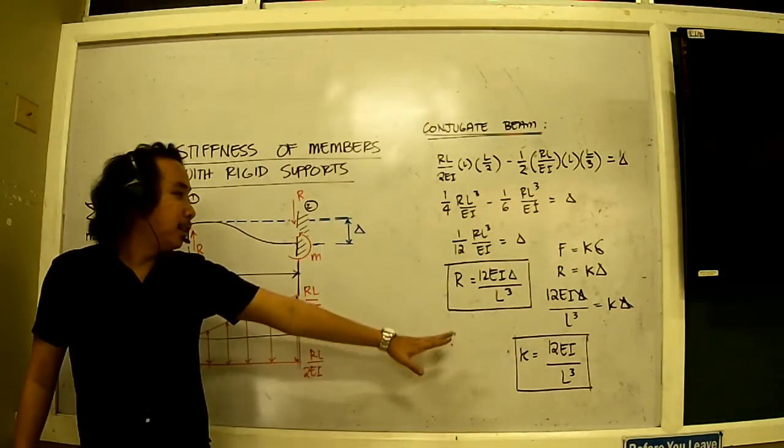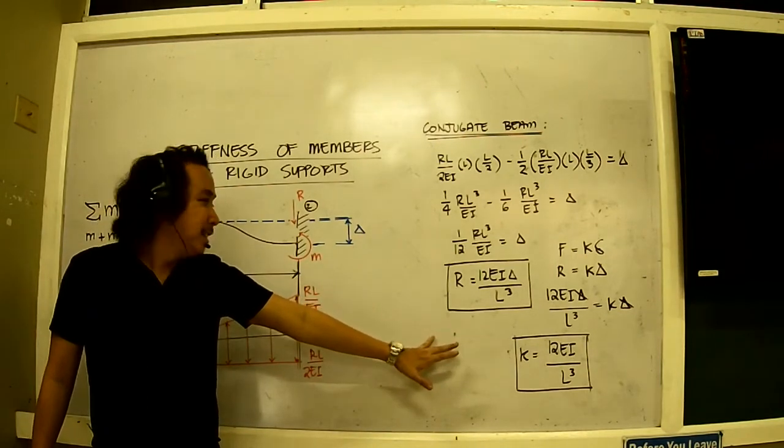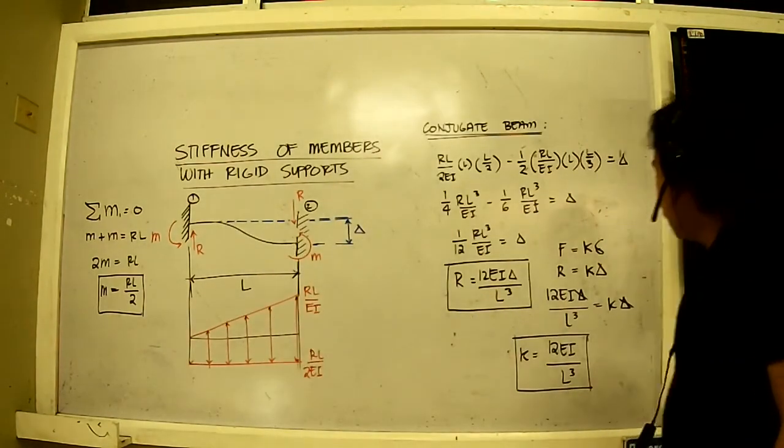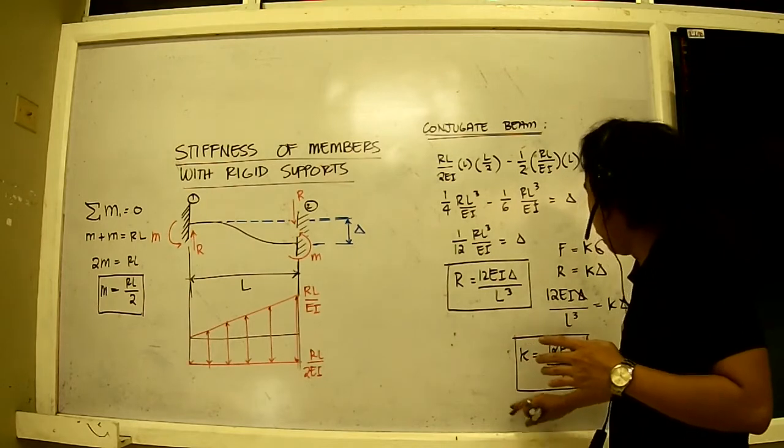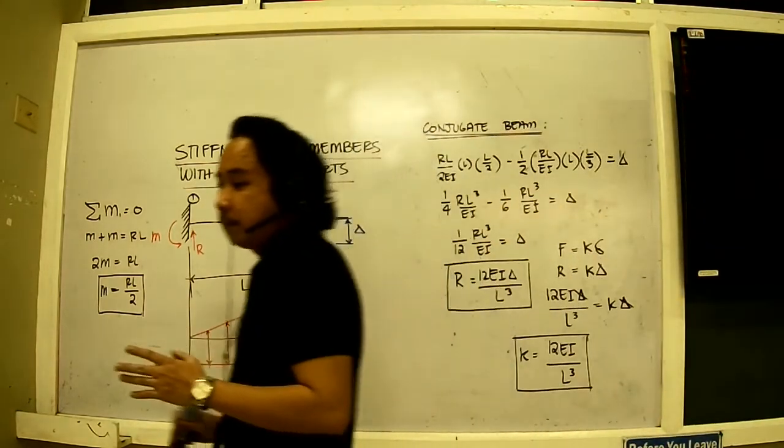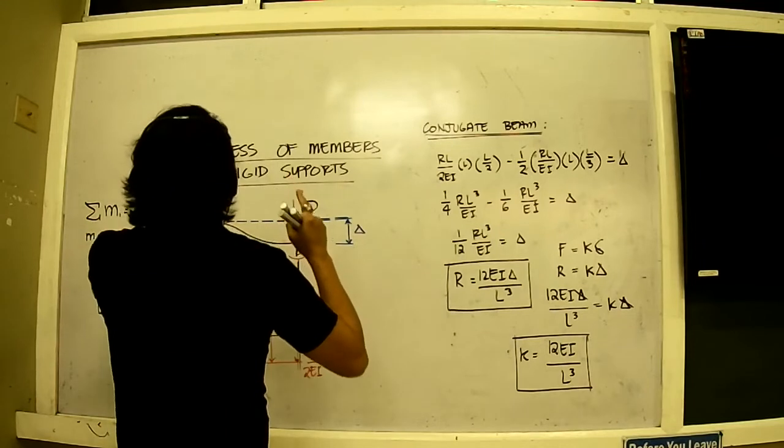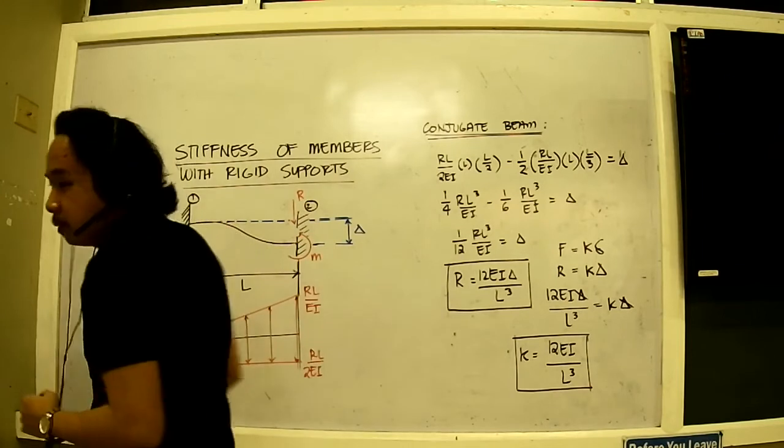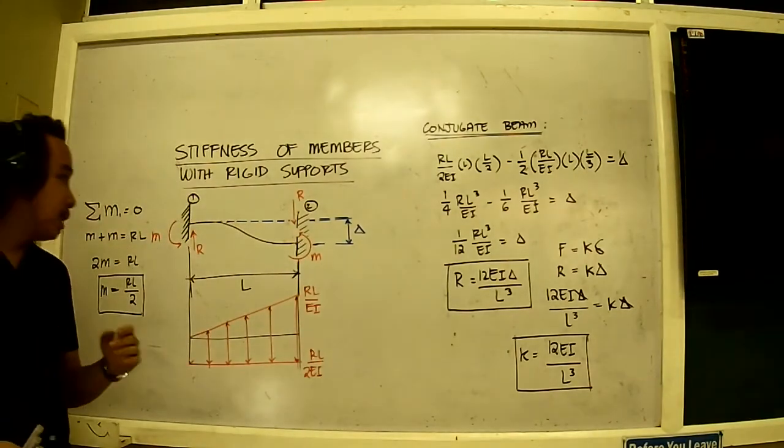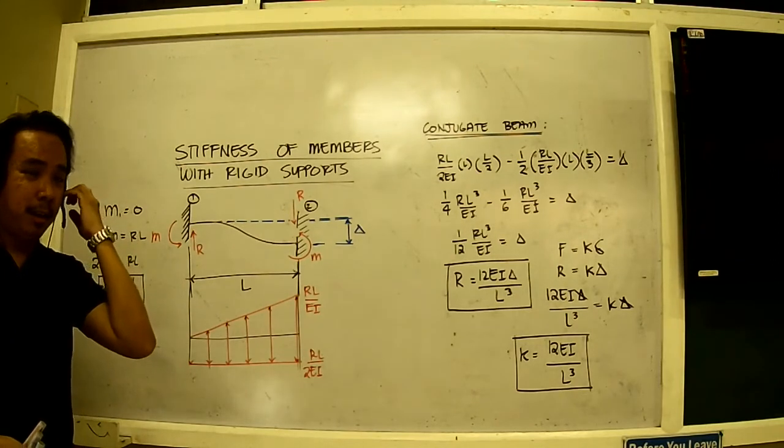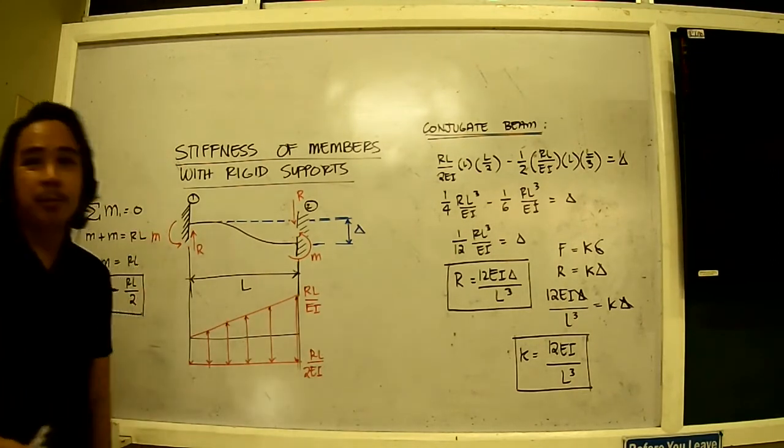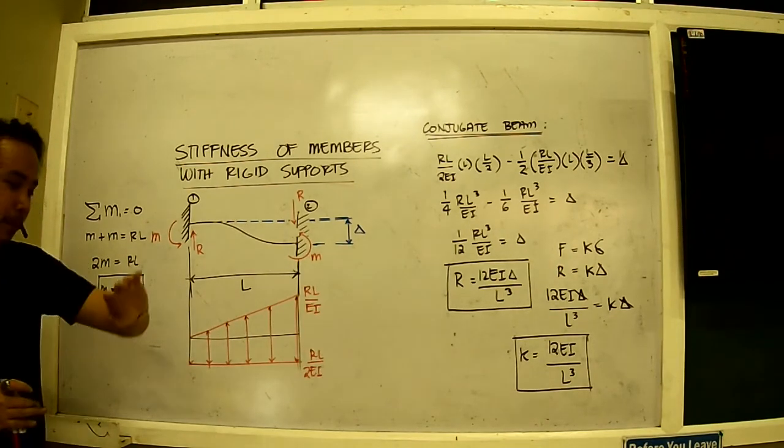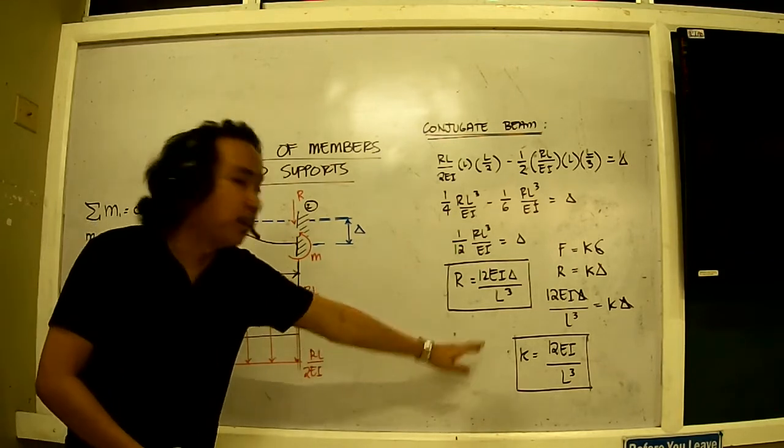So kindly take note of this expression here. This is how we derive the equations. Now this is only good for situations in which we can define that the two endpoints of the member is rigid. This is very common when we're dealing with RC structures.